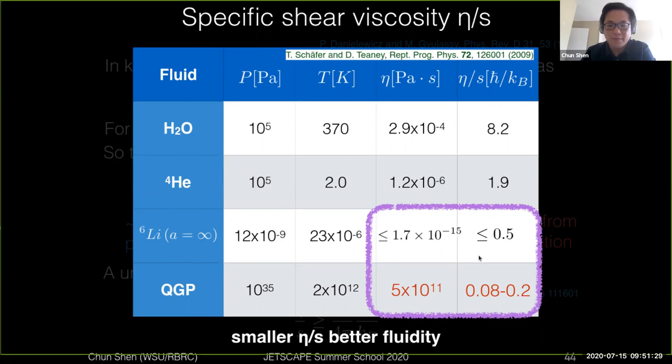Although these two are very good fluids, the mechanism to generate this good fluidity is actually rather different between cold atoms and quark-gluon plasma.